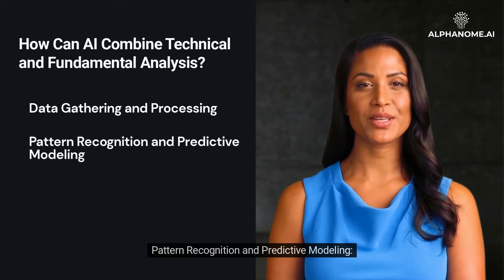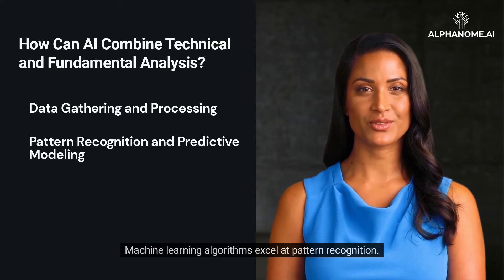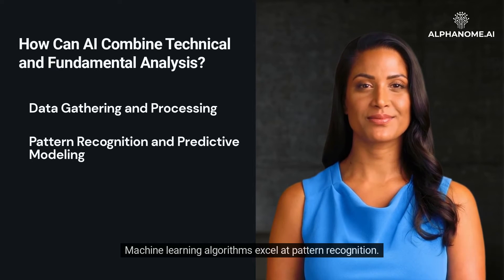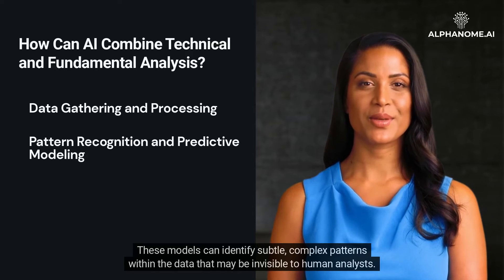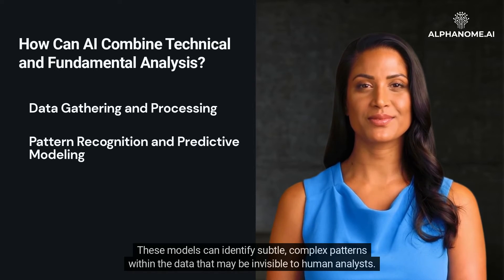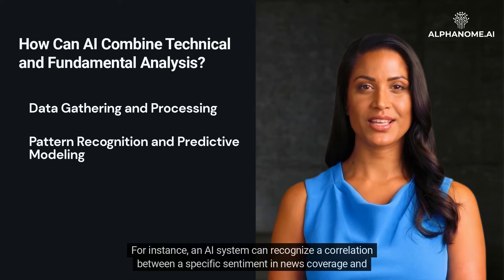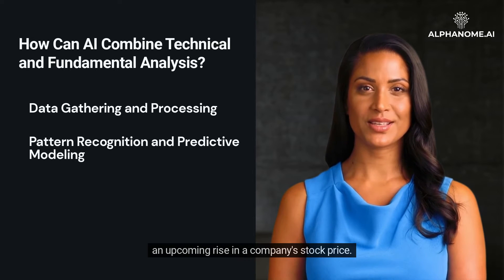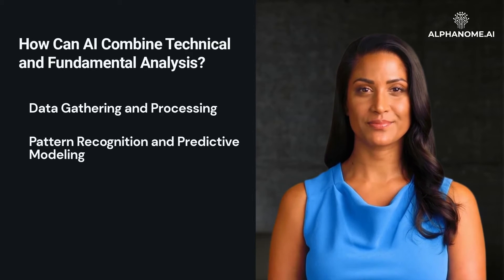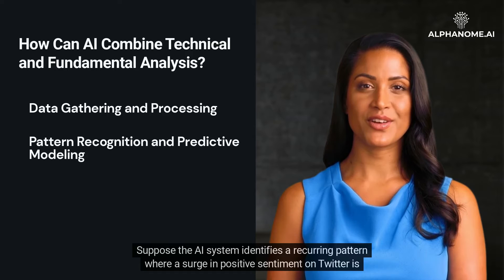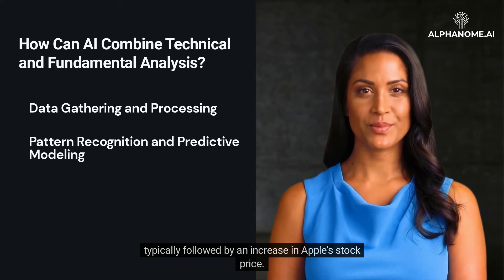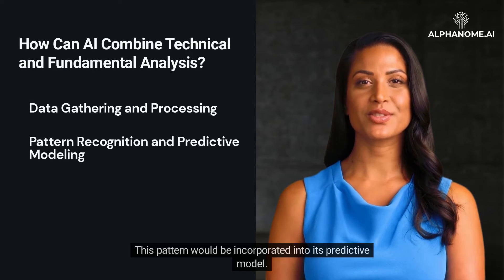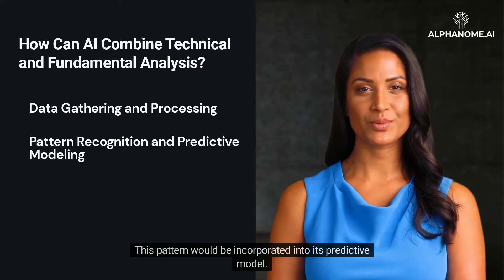Pattern Recognition and Predictive Modeling: Machine learning algorithms excel at pattern recognition. These models can identify subtle, complex patterns within the data that may be invisible to human analysts. For instance, an AI system can recognize a correlation between a specific sentiment in news coverage and an upcoming rise in a company's stock price. Suppose the AI system identifies a recurring pattern where a surge in positive sentiment on Twitter is typically followed by an increase in Apple's stock price — this pattern would be incorporated into its predictive model.